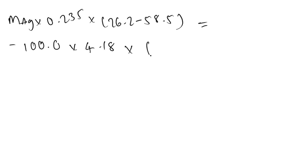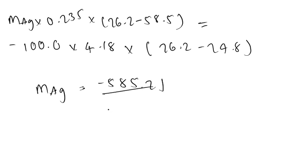Which is 26.2 take away 24.8 degrees Celsius. So we simplify that down, we get the mass of our unknown, M Ag, is equal to negative 585.2 joules divided by negative 7.59 joules per gram, we get a value of 77.1 grams.